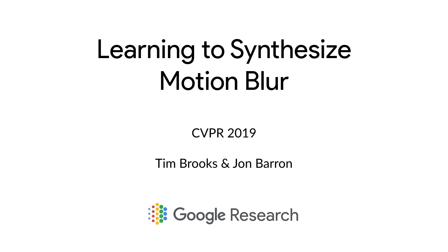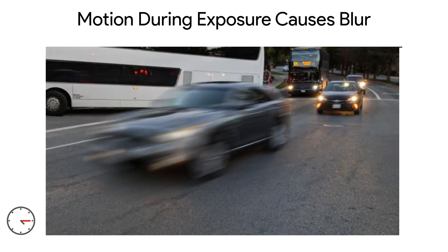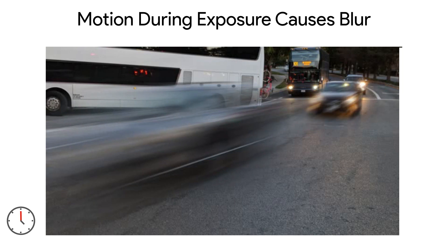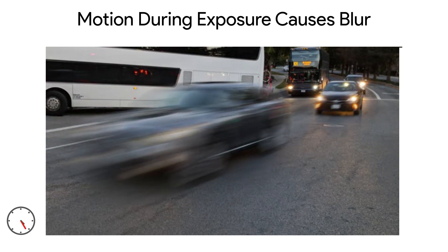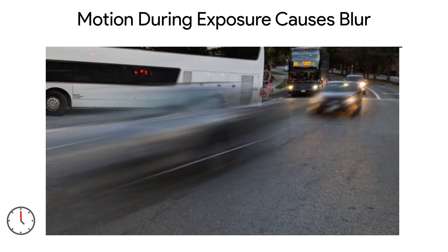Hi, my name is Tim and I'm going to talk today about how to synthesize motion blur. Motion during the exposure of a photograph results in motion blur, as we can see in the car that becomes blurred over time. The longer the photograph is exposed, the larger the motion blur looks.